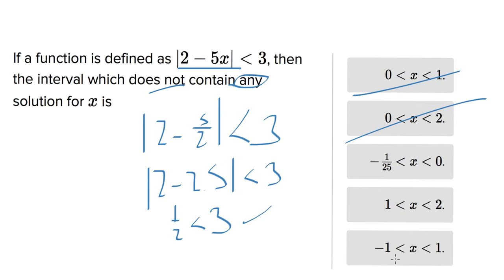We can do something similar for the last answer choice. Between negative 1 and 1 we have the value 0. So if we plug in 0 we're going to get 2 minus 5 times 0 so just 2 minus 0 or 2 being less than 3, and 2 is in fact less than 3 so we can go ahead and cross out answer choice E. And then we're left with these two answer choices.